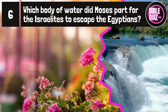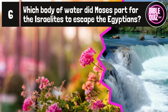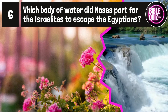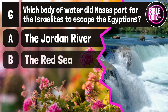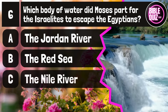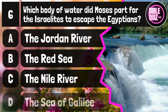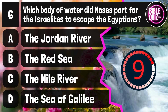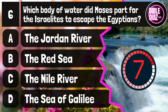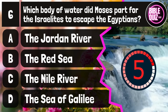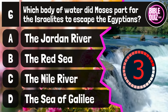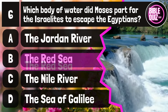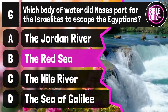Question number 6. Which body of water did Moses part for the Israelites to escape the Egyptians? Option A: The Jordan River. Option B: The Red Sea. Option C: The Nile River. Option D: The Sea of Galilee. Time to think. The answer is option B: The Red Sea.